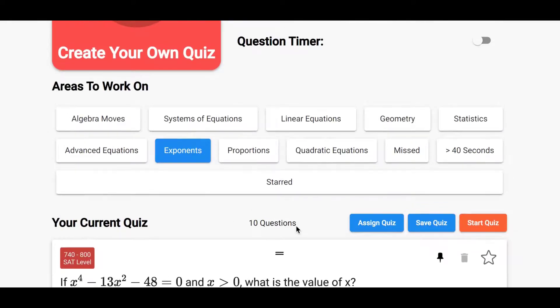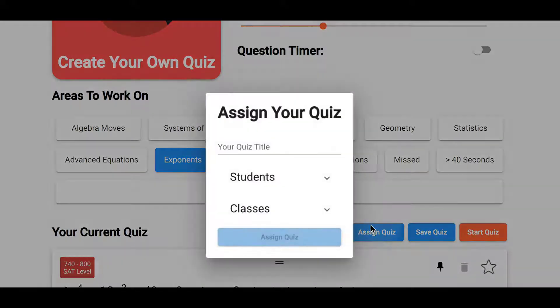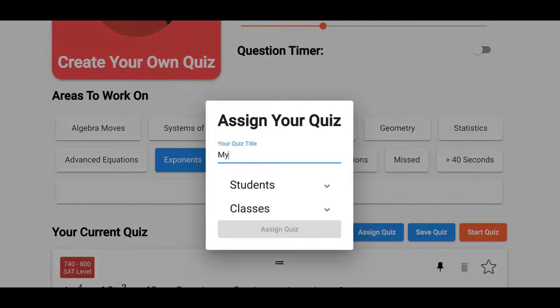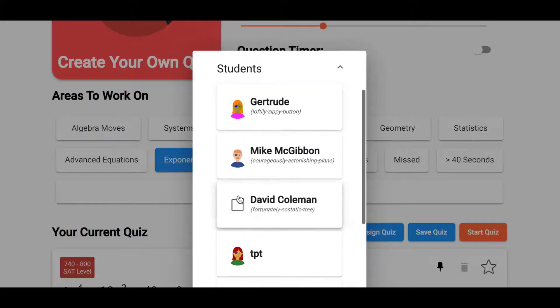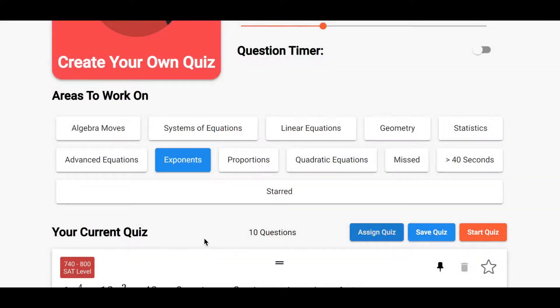We can either just work through those in real time by clicking on Start Quiz, or I can assign it to the student and name it whatever I want, find my student in my list, and then just assign it to them. Once it's been assigned, it'll appear on their homepage.